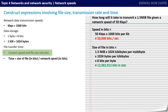Now convert the file size into bits. We have a 1.5 megabit file — multiply by 1,024 kibibytes per megabit, then by 1,024 bytes per kibibyte, then by 8 bits per byte. This gives us an approximate file size of 12.5 million bits.